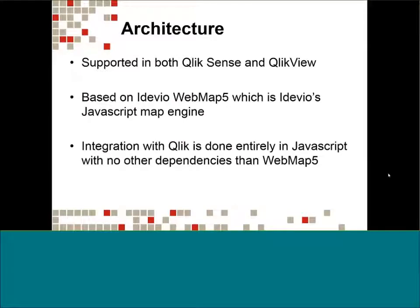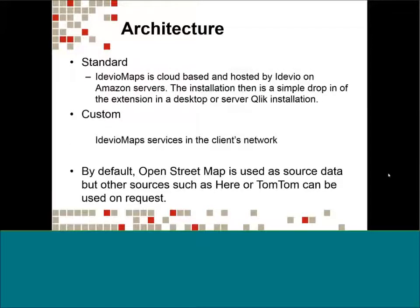Onto the architecture: it's supported in both Qlik Sense and QlikView, based on IDVO's Web Map 5 JavaScript map engine. Integration with Qlik is done entirely through JavaScript with no other dependencies beyond the connection to the Web Map 5 service. For deployment, the standard option is cloud-based, hosted on Amazon servers, with installation done by dragging and dropping extensions into the extensions folder in QlikView or Qlik Sense. IDVO also provides options for local hosting if you'd rather have the mapping service on your own servers — it's a different licensing, but it's possible.